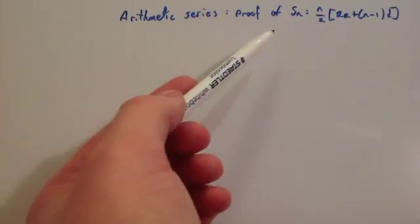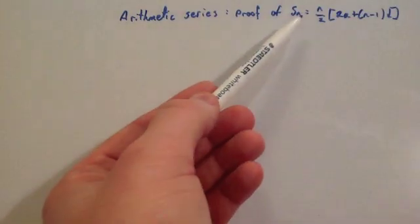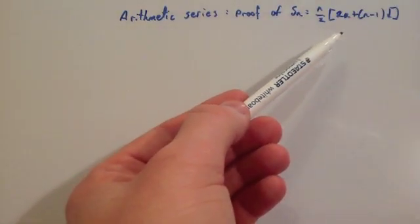In this video we're going to look at the proof for Sn for an arithmetic series to be n over 2 brackets 2a plus n minus 1d.